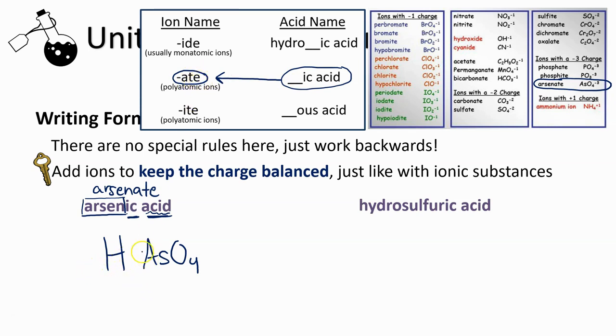We're not quite done yet though, because like our key idea says, we've got to keep the charges balanced. Right now hydrogen with a +1 charge versus arsenate with a -3 charge does not have a balanced charge. I'm going to actually need two more hydrogens for a total of three, which means the formula for arsenic acid would have to be H3AsO4.